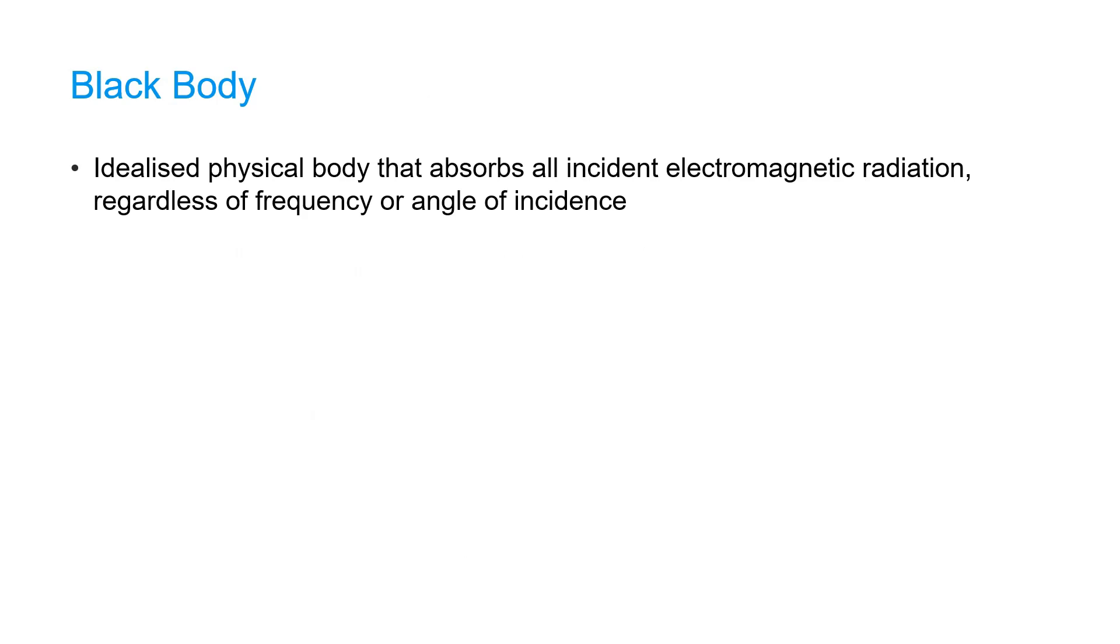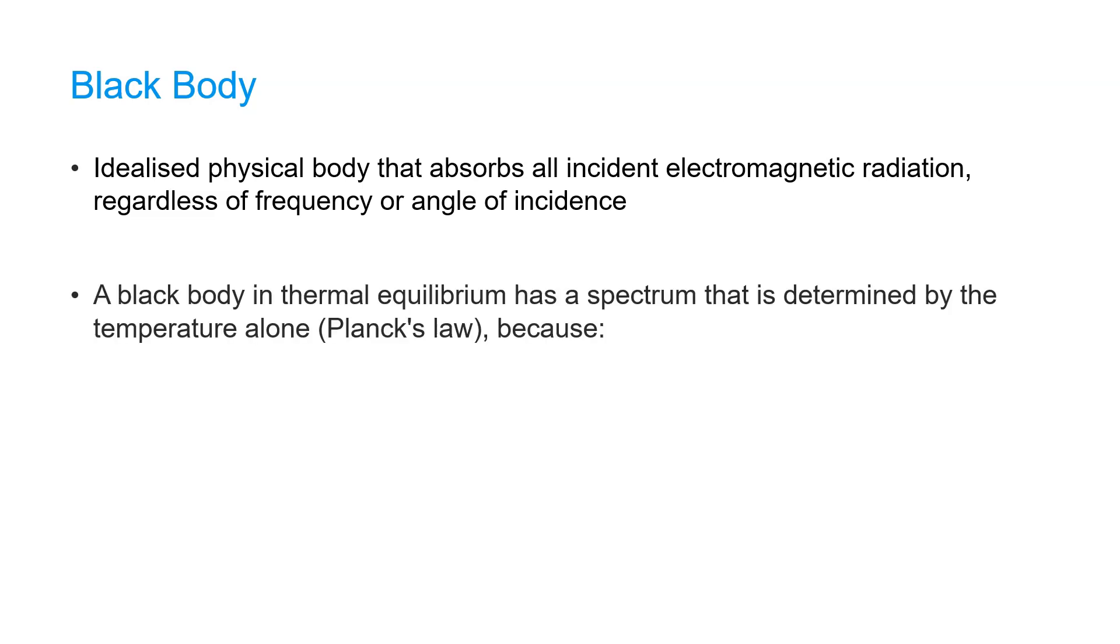In order to understand the physical theory presented in the next slides, it's important to define a black body. A black body is an idealized physical body that absorbs all the incident electromagnetic radiation regardless of its frequency or angle of incidence. The spectrum of such a black body in thermal equilibrium is determined by its temperature alone. This is defined with Planck's law. That is because a black body is an ideal emitter and it's also a diffuse emitter.